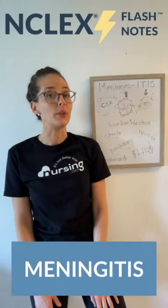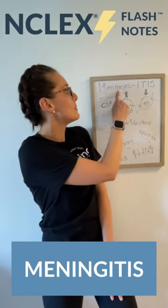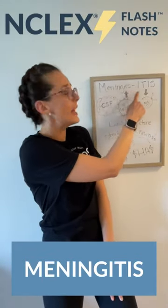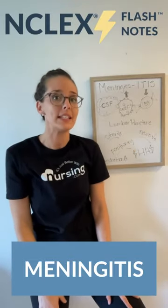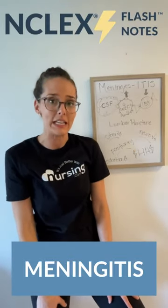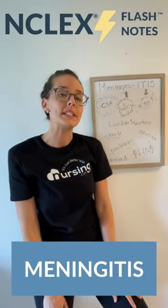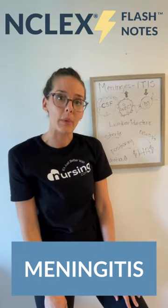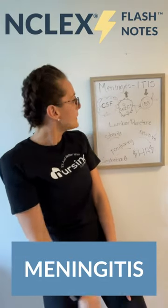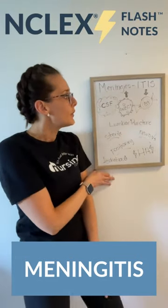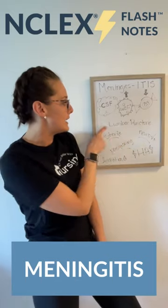Meningitis — you can remember it affects the meninges, and 'itis' means inflammation. It's inflammation of the meninges, which are the membranes that cover the spinal cord and the brain. This is also what you'll find on assessment.